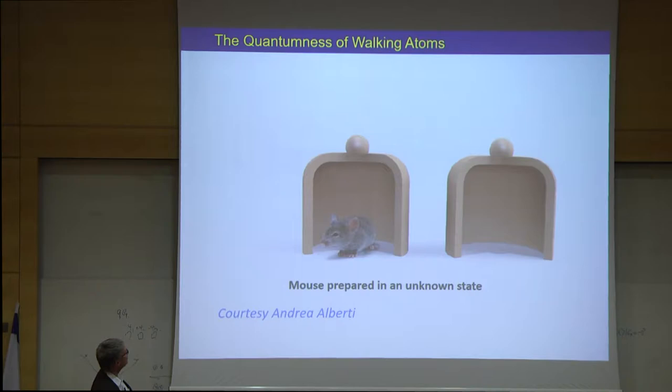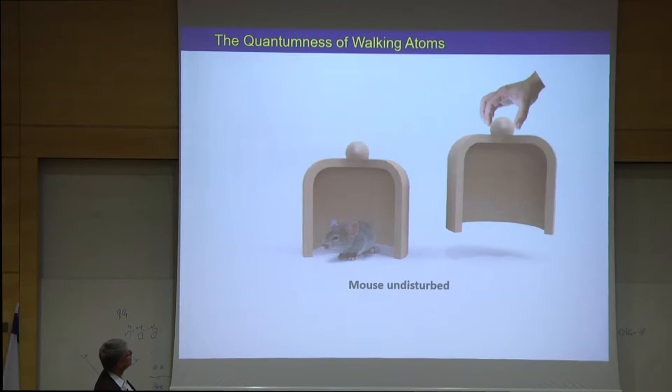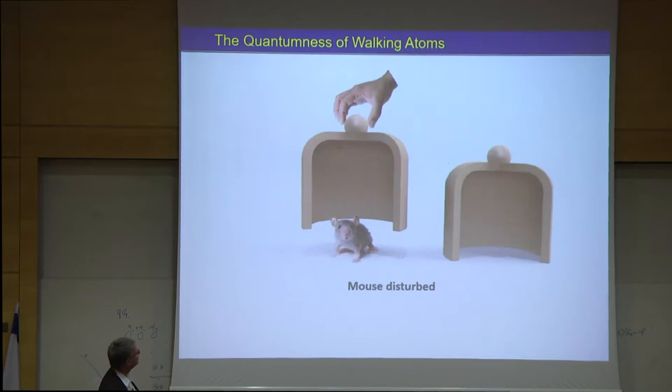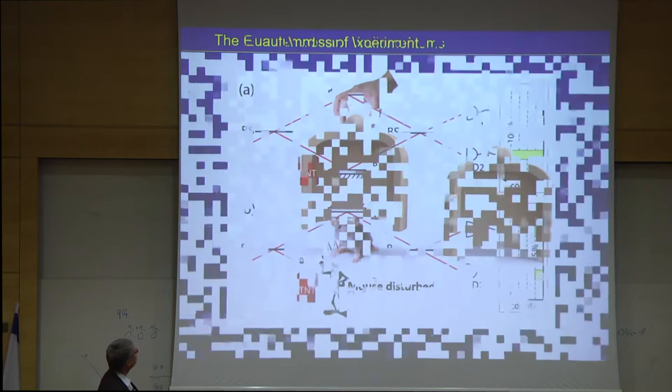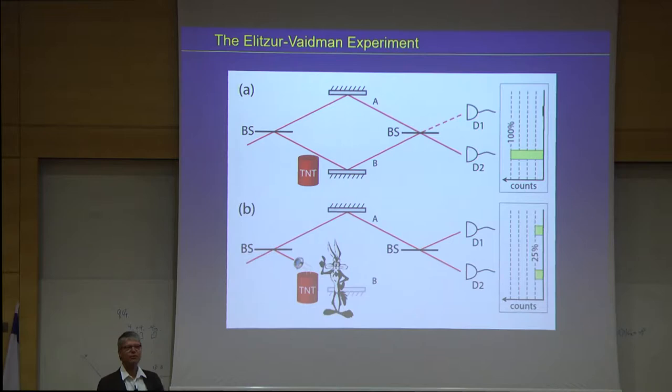And Leggett-Garg gave a criterion, which I'm not going to, and I'm going to show it, but nothing more, which gives an inequality, which distinguishes these two ideas in a quantitative way. So this is by Andrea Alberti, just a visualization of this. So if you have a two-state system, and the mouse is prepared in an unknown state, then if you look, then if you don't find the mouse, no change in the classical world. But if you find the mouse, then there should be a change in the classical world. So this is now the Eliezer-Vaidman experiment, which you probably know from your lectures.